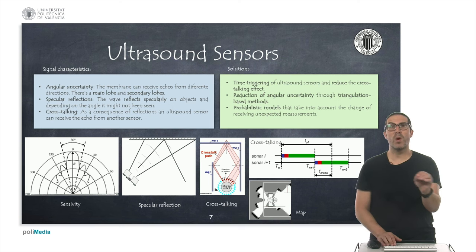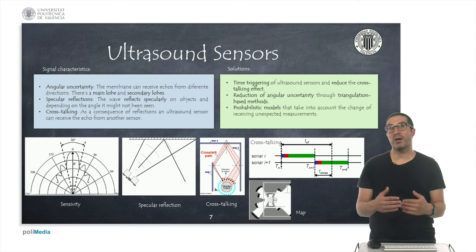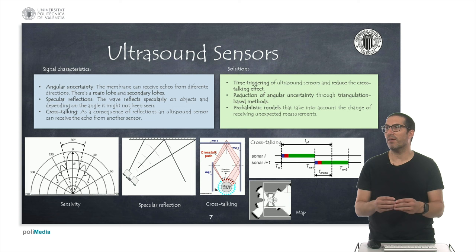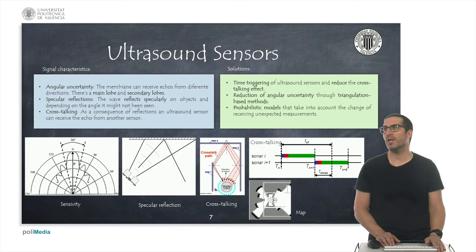Another problem that affects the sensors are the specular reflections, because they reflect like the light in a mirror, and it could happen that we are facing or pointing towards an object but we cannot hear the sound back. And unfortunately some objects are not perfect and they have this reflection generate some reflections also back to the sensors.